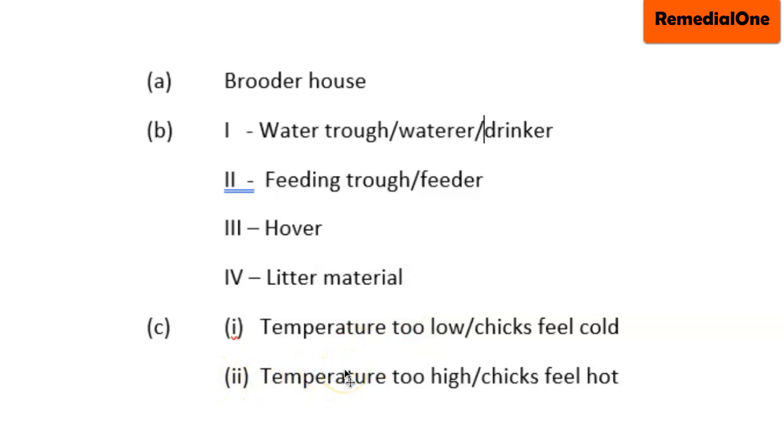Part ii: Chicks move away from III and spread out with their mouth open. It means temperature in the brooder house is too high for them. So in that case, chicks feel hot. You can say chicks feel hot or temperature is too high for them.